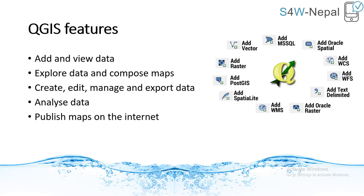Now let's see some of the features of QGIS. It helps to add varieties of data, as we can see on the right-hand side, and view them in the form of layers. Maps can be composed and spatial data can be explored interactively with a friendly graphical user interface. Vector and raster data in GIS can be created, managed and exported in several different formats. It also helps to analyze data with the help of vector analysis, sampling, geoprocessing, database management tools, etc. It also helps to publish the generated map on the internet. These mentioned features might be new to most of you, so they will be covered further in our next tutorial video.